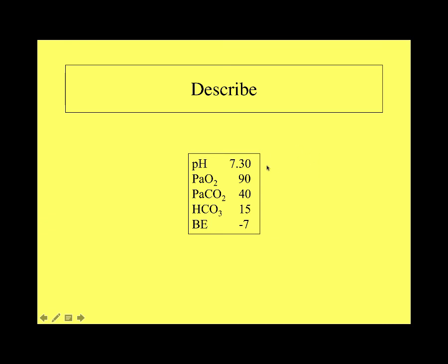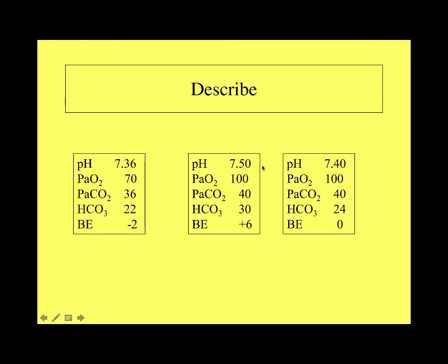Example 3: pH 7.30 — acidosis. Oxygenation is within normal limits. PCO2 is normal. But bicarb is very low and base excess is very high. This is a metabolic acidosis — the low bicarb and the metabolic component explain this acidosis. Students should be able to run through all of these blood gases and describe what they are.